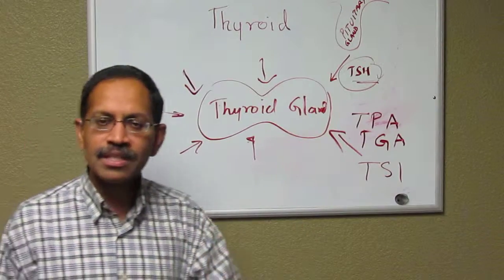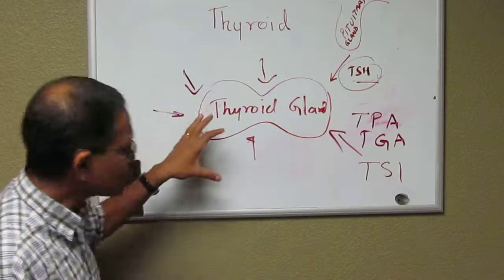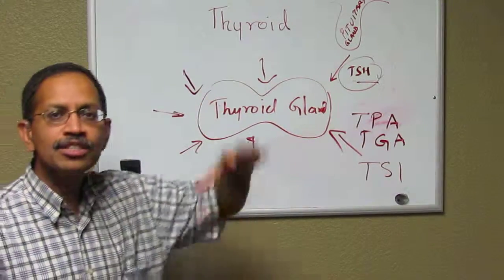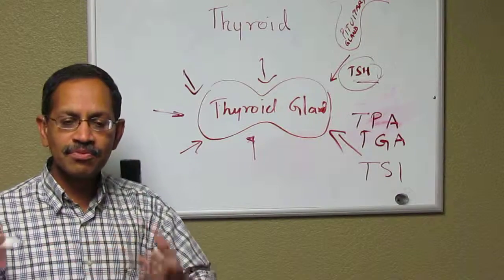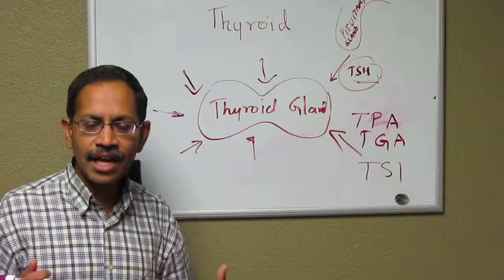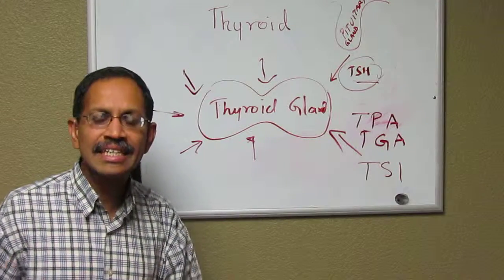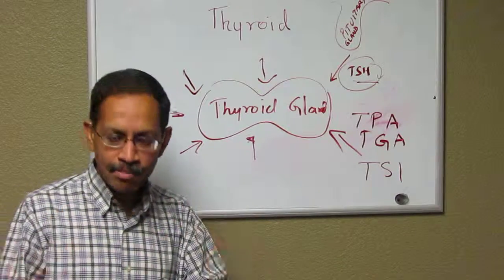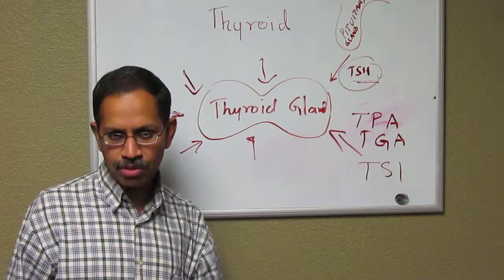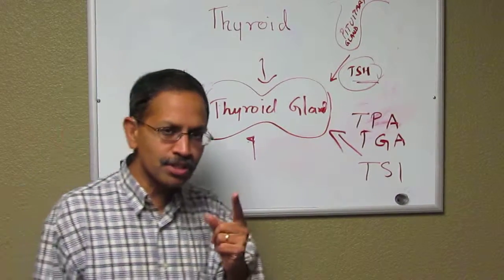Some children will have one or the other. The most common one is the low-acting thyroid. The fast-acting thyroid, or hyperthyroidism, is relatively less common and a little bit more difficult to deal with.